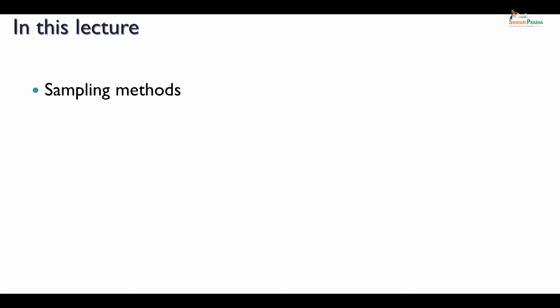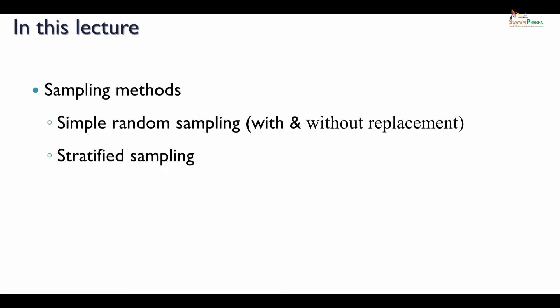In this lecture we are going to see about some of the sampling methods. Here we are going to discuss about simple random sampling and stratified sampling. In simple random sampling there are two methods: simple random sampling with replacement and without replacement. Let us see one by one in detail.